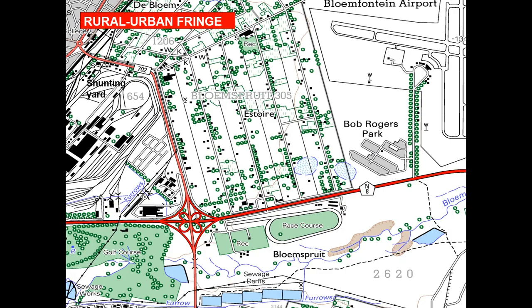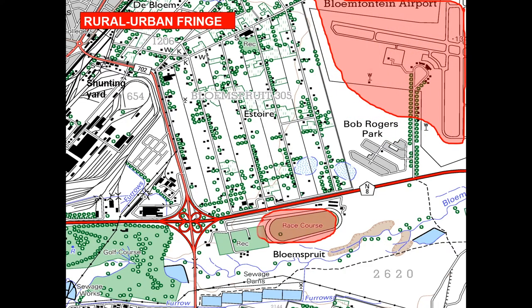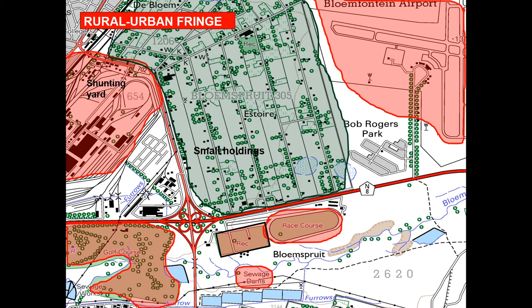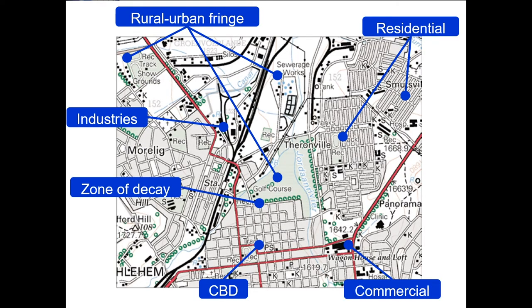Let's have a look at identifying the rural-urban fringe. We have our airport, race course, recreational area, sewage dams, a golf course, as well as the shunting yard, and small holdings. Looking at the rural-urban fringe, you can see sewage works, golf course, recreational track and show grounds, industries, zone of decay, CBD, commercial area, as well as residential areas.